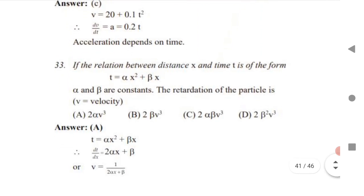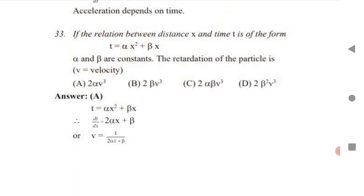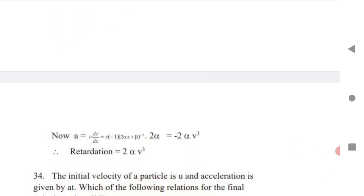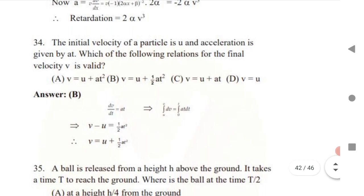A very tricky question: the relation between x and t is given as t = αx² + βx, where α and β are constants. Find the retardation. Since t is given (not x), differentiate to get dt/dx = 2αx + β. Reciprocally, v = dx/dt = 1/(2αx + β). To find retardation (negative acceleration), use the formula: a = v · dv/dx. Substituting and differentiating gives the retardation.